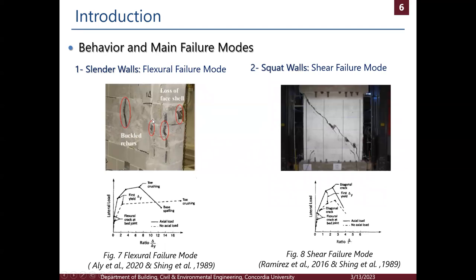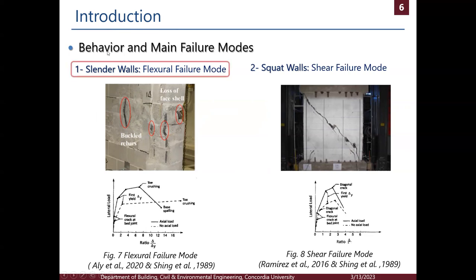In the flexural failure mode, we expect failure in the form of buckling of compression bars, masonry crushing, spalling of face shell, and tension yielding or rupture of tension bars. In the shear failure mode, we expect major diagonal cracks. The flexural failure mode is preferred because it is more ductile, allowing very large ductility, as opposed to the shear failure mode. In this study, we are working on slender walls having a flexural failure mode.